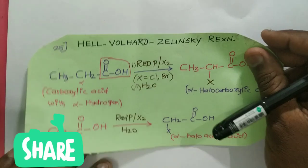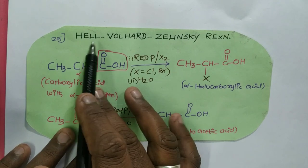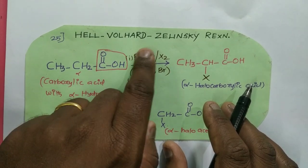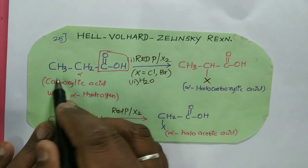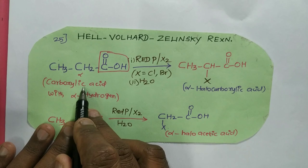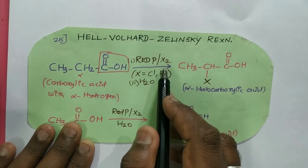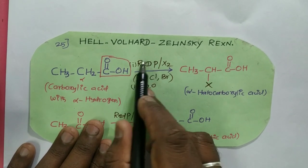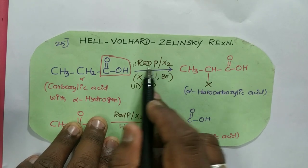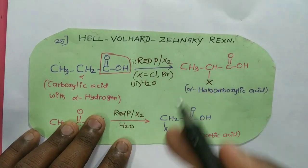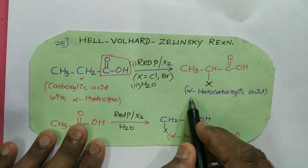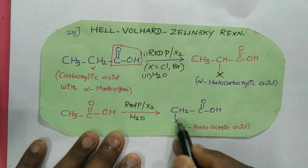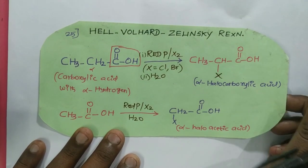Next is the Hell-Volhard-Zelinsky (HVZ) reaction. This involves an alpha-hydrogen-containing carboxylic acid reacting in the presence of red phosphorus and a halogen — chlorine or bromine. A small amount of red phosphorus reacts with the halogen to form phosphorus trichloride, which participates in the reaction to substitute the alpha hydrogen with a halogen, giving an alpha-halo carboxylic acid. For example, acetic acid gives alpha-halo acetic acid. That is the HVZ reaction.